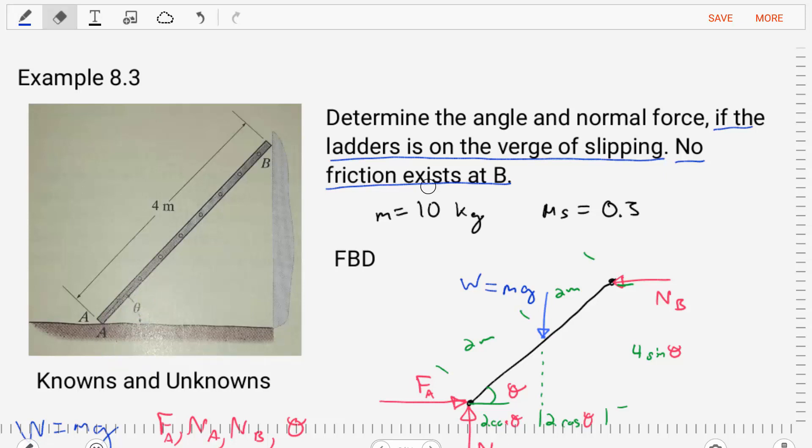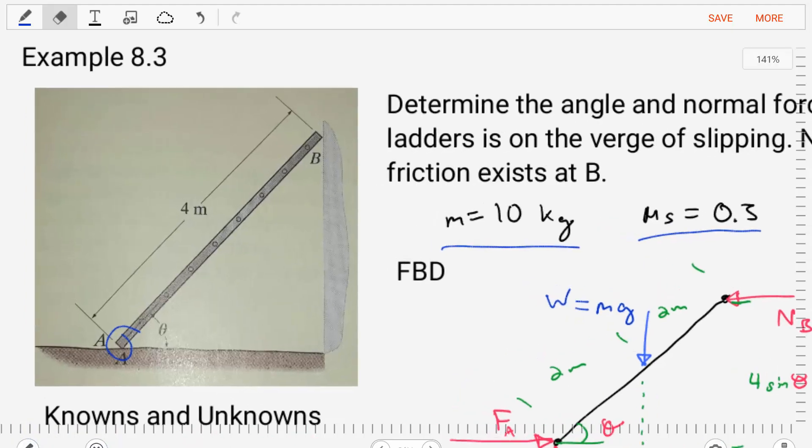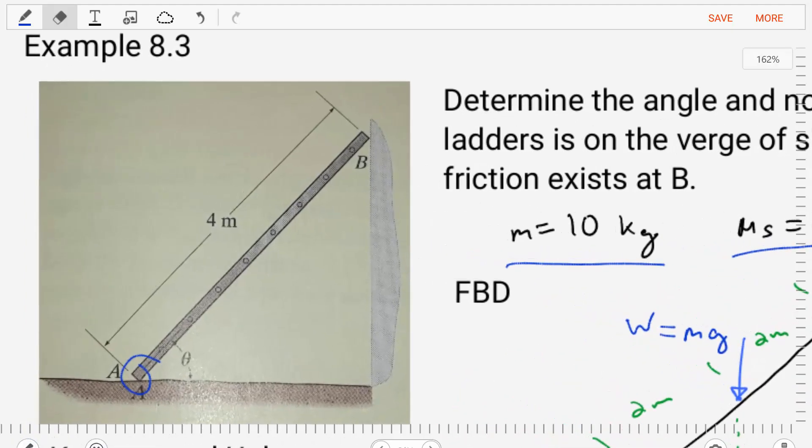Now we are given some information. We're told that the mass of the ladder is 10 kilograms and that the coefficient of static friction, this would be at point A, is equal to point 3. If we look at the diagram of the ladder, we can see that the ladder is 4 meters tall and that is all the information we're really given.